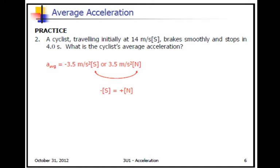Another problem. Here we have a cyclist initially traveling at 14 meters per second south. They slow down and stop in 4 seconds. What's the cyclist's average acceleration?